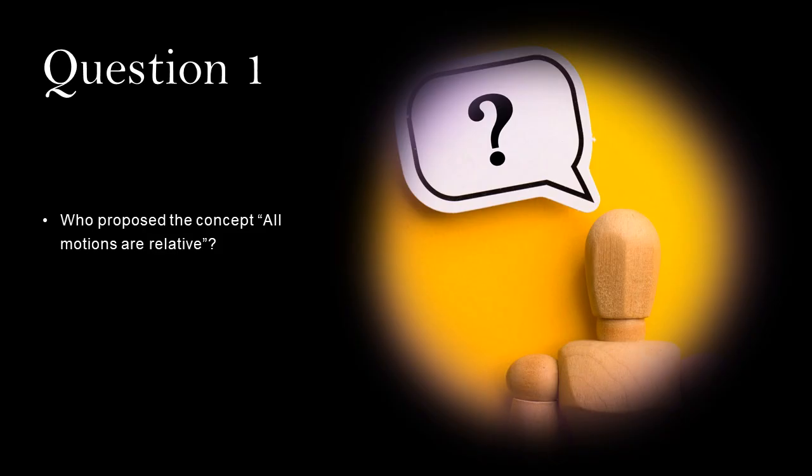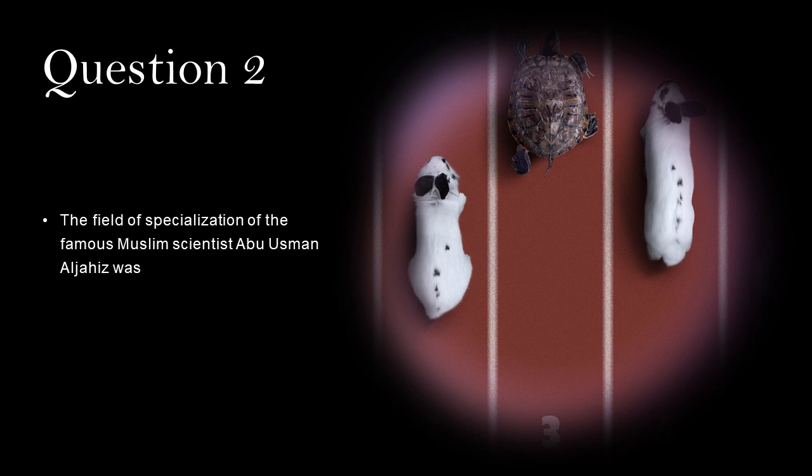Question 1: Who proposed the concept all motions are relative? Albert Einstein. The field of specialization of the famous Muslim scientist Abu Usman al-Jahiz was zoology.